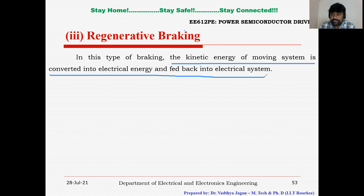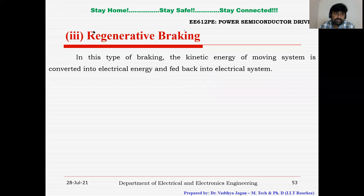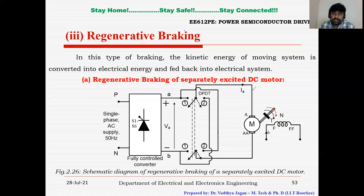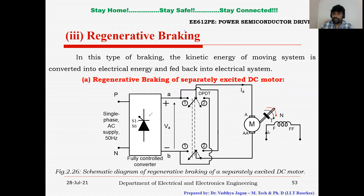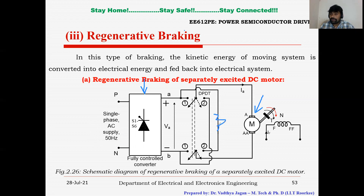In regenerative braking, there is no external resistance — instead, a power converter such as a fully controlled phase-control rectifier is used. With feedback diodes, the kinetic energy of the moving system can be returned to the source, increasing the overall efficiency of the system. We first consider the separately excited DC motor for regenerative braking.